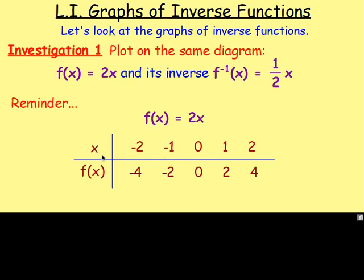So if x was 0, you would have f of 0. So 2 times 0 is 0. If it was 1, you'd have 2 times 1, which is 2. If x was 2, you'd have 2 times 2, which is 4. And you do the same with the negatives. You only need 2 points to draw a straight line, but you're best doing 3, 4, 5 points to make sure you don't make a mistake.